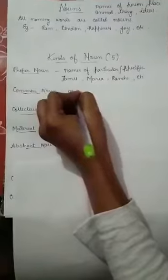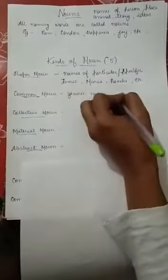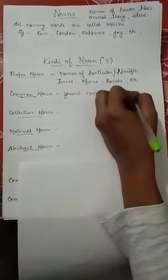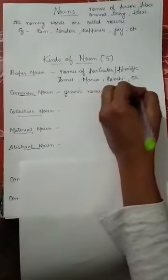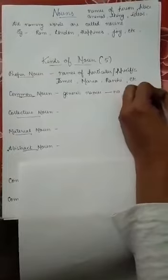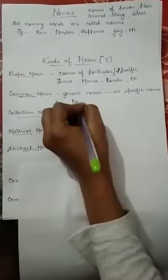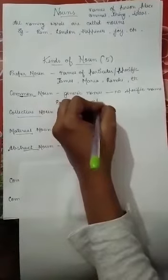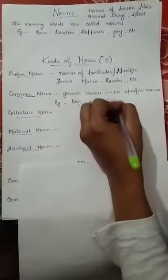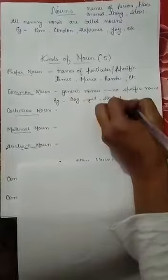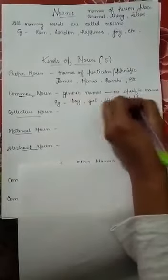Moving on to the second one: common noun. Common noun refers to generic names — it does not include any specific name. Examples include boy, girl, student, table, etc., where no specific name is given.